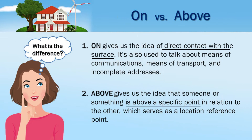On versus above: 1. 'On' gives us the idea of direct contact with the surface. It's also used to talk about means of communications, means of transport, and incomplete addresses. 2. 'Above' gives us the idea that someone or something is above a specific point in relation to the other, which serves as a location reference point.